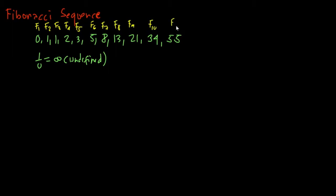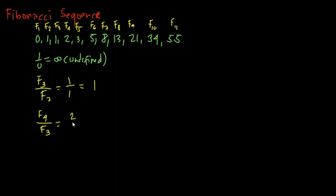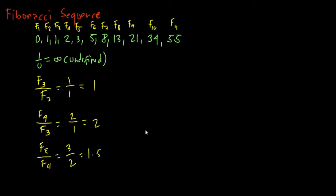We have 11 terms: f1 through f11. The ratio of f3 to f2 is 1 over 1, which equals 1. The ratio of f4 to f3 is 2 over 1, which equals 2. The ratio of f5 to f4 is 3 over 2, which equals 1.5.